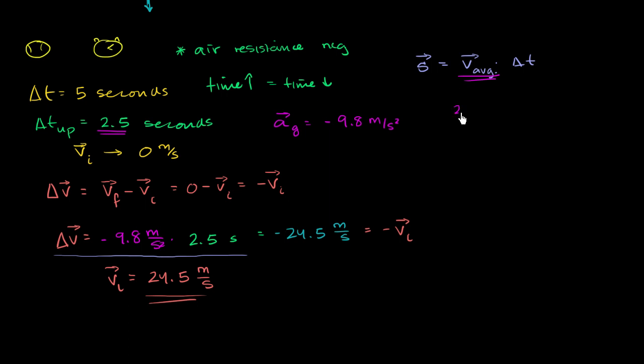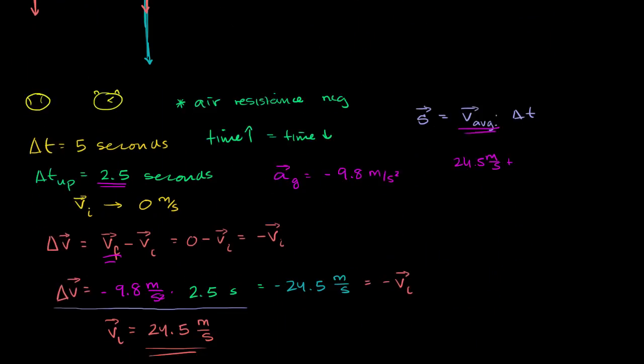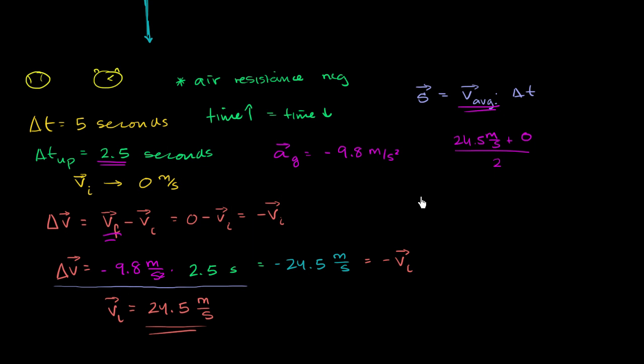So what is that? That's going to be 24.5 meters per second, plus what's our final velocity? In this situation, remember, we're just going over the first 2.5 seconds. So our final velocity is, once again, 0 meters per second. We're just talking about when we get to this point right over here. So our final velocity is just 0 meters per second, and we're just going to divide that by 2. This will give us the average velocity. And then we want to multiply that times 2.5 seconds. So we get 24.5 divided by 2, that gives us 12.25 times 2.5. This is 12.25 meters per second times 2.5 seconds.